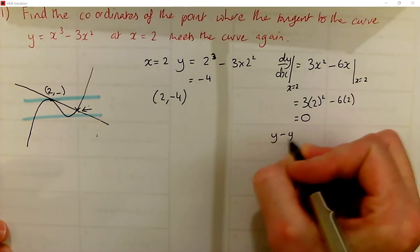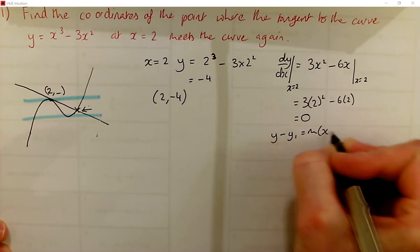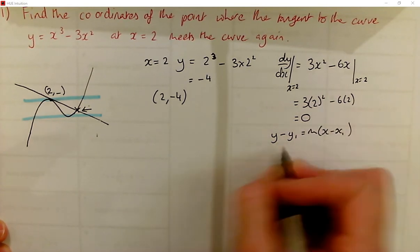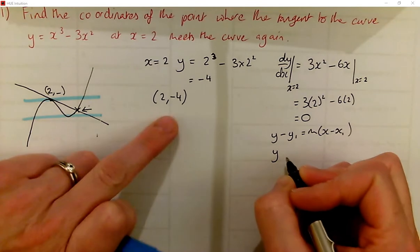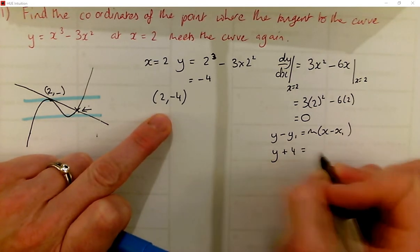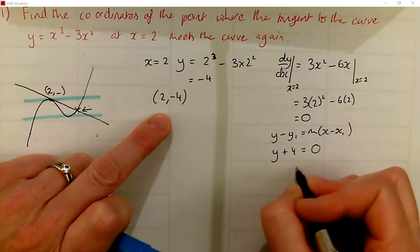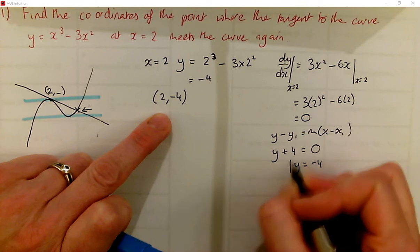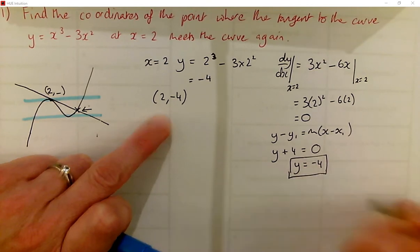So that makes it easy to work out the equation of the line. You could substitute into this and it will still work. But we know that it's going to be y minus the y coordinate is equal to 0. So y is negative 4. So that's the equation of the tangent.